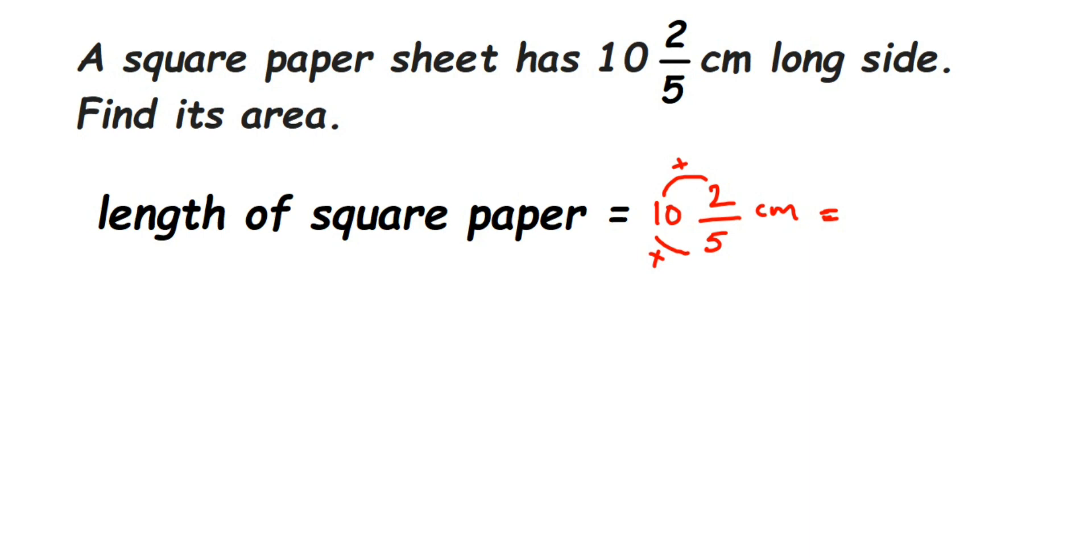So we'll get here 52 upon 5. Right, then next we have to find out here is its area. We have to find out the area of square, so we know area of square is side into side.